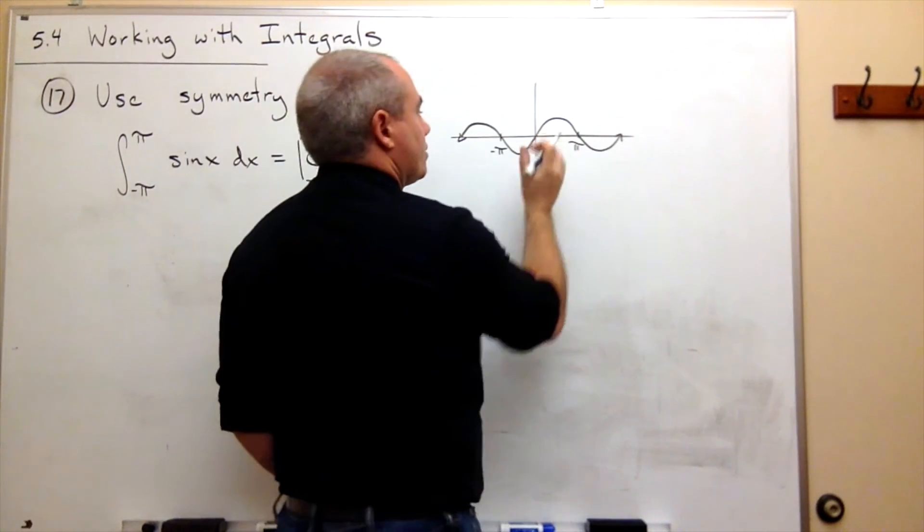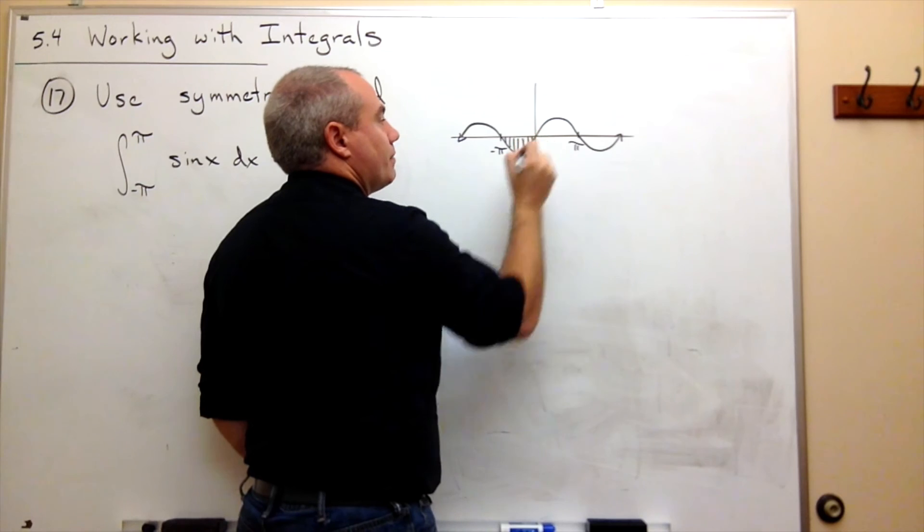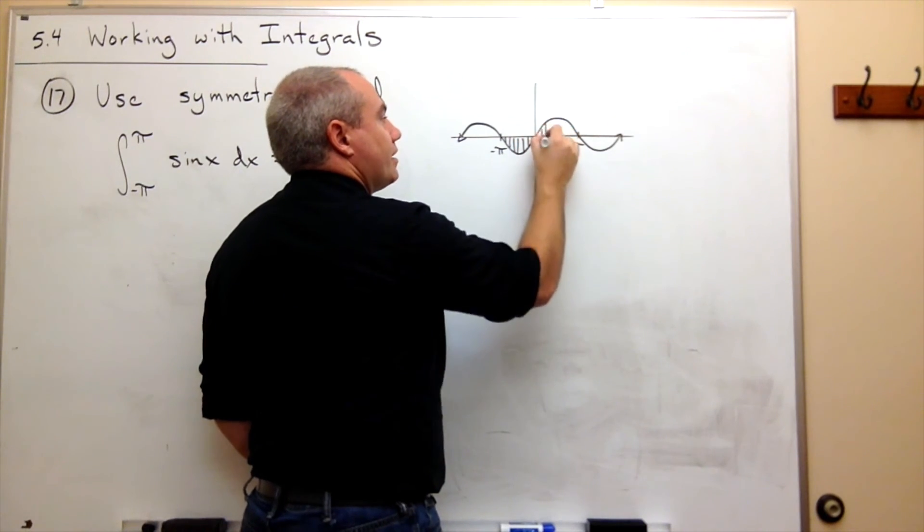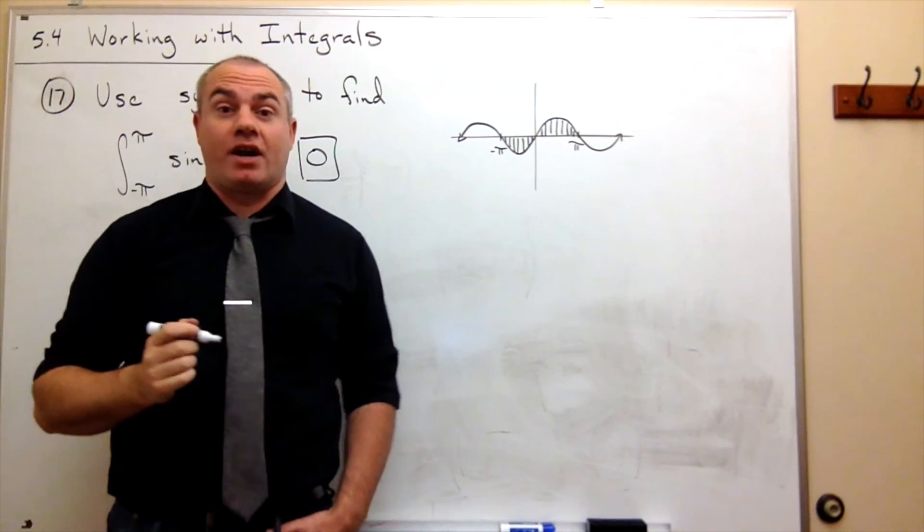But it makes some sense too if I just look at the graph. This is adding up, so to speak, some negative area, and this is adding up a symmetric positive area.